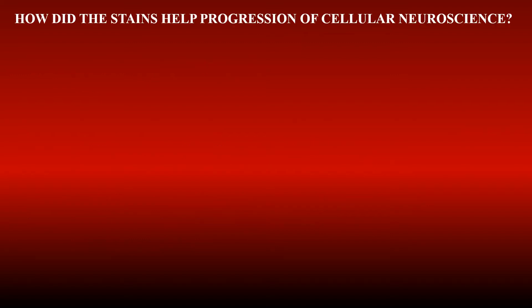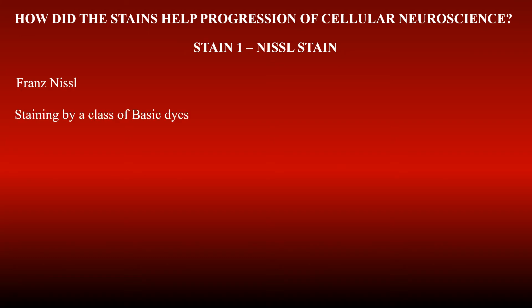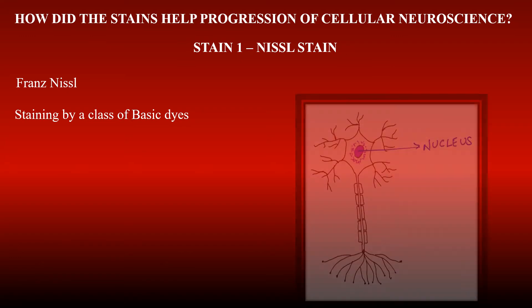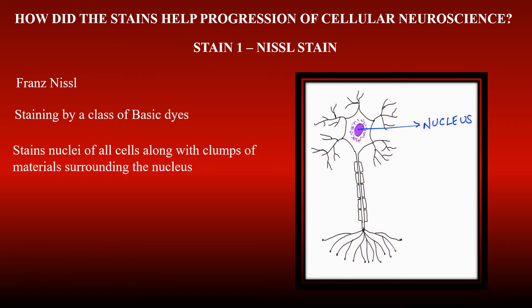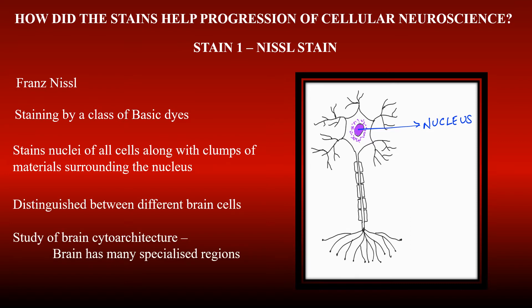This was overcome with the introduction of stains, which colored only some parts of the brain tissue and not others. There were two stains that played an important role in the progression of cellular neuroscience. One was the Nissl stain, introduced by Franz Nissl in the late 19th century. He stained the brain tissue with a class of basic dyes and found that the nucleus of all cells in the brain tissue, along with clumps of material surrounding the nucleus, was stained. This distinguished between different brain cells and helped in the study of brain cytoarchitecture — the arrangement of cells of the nervous system.